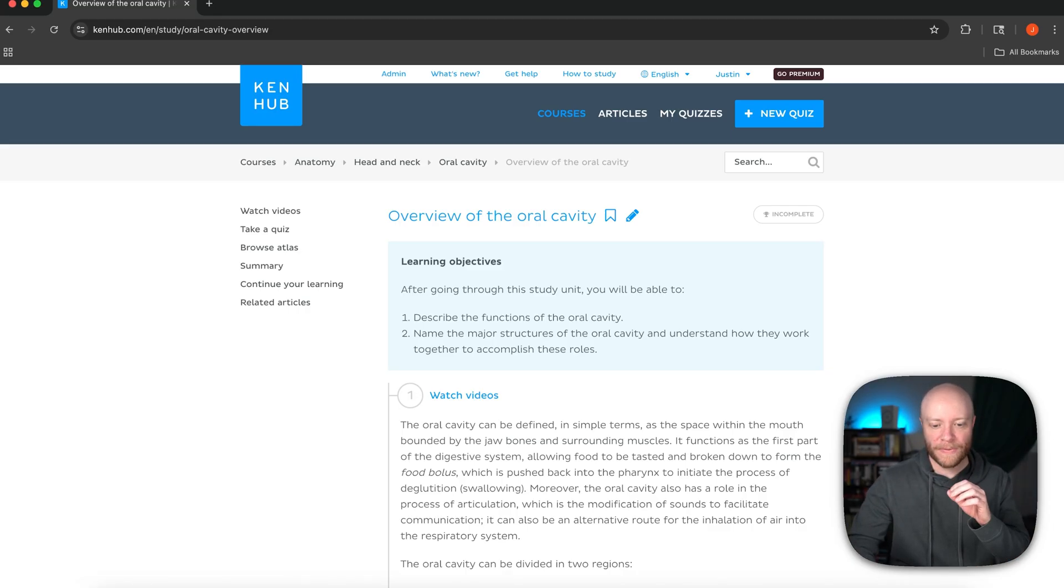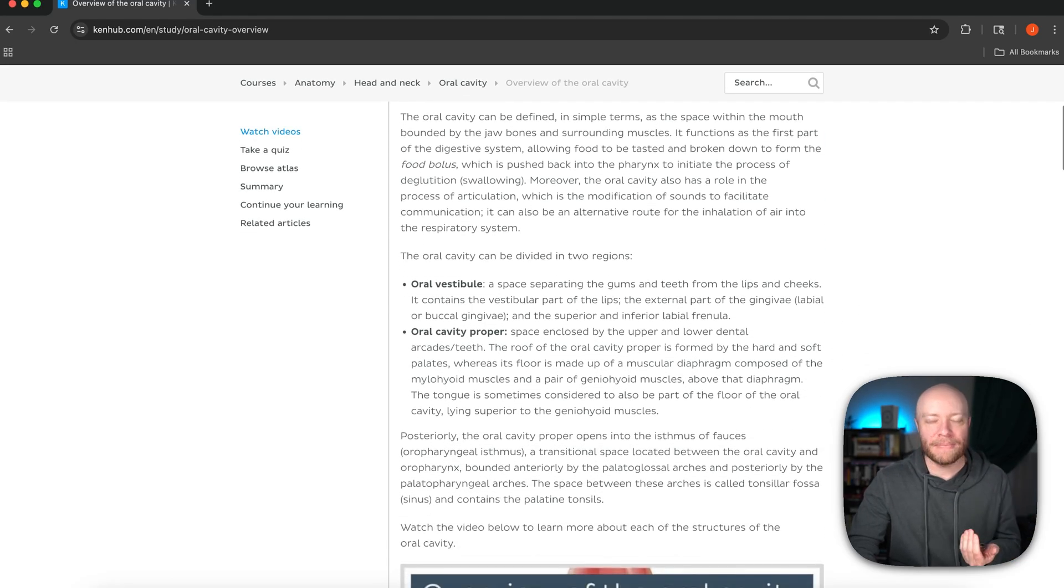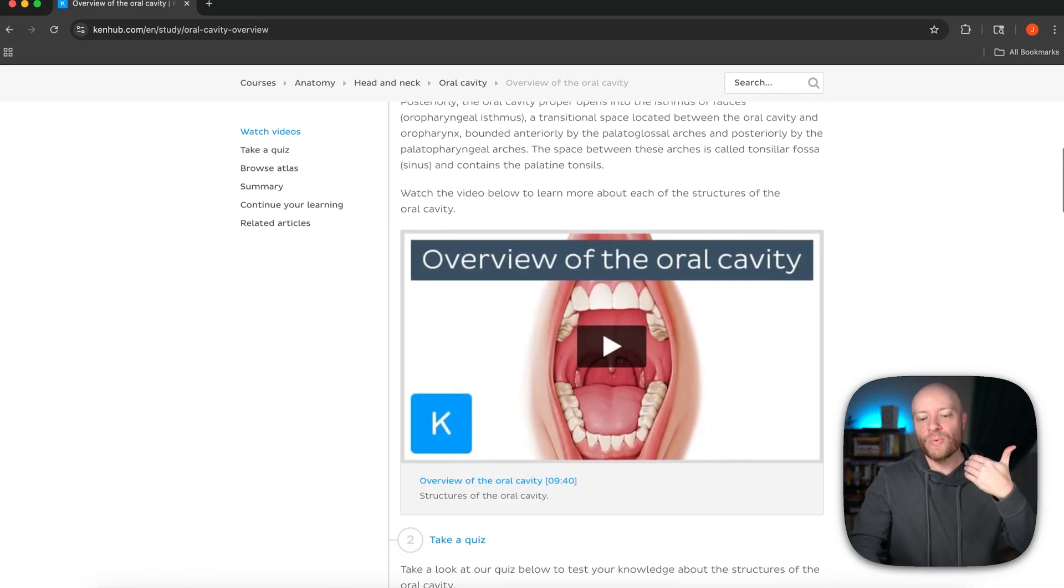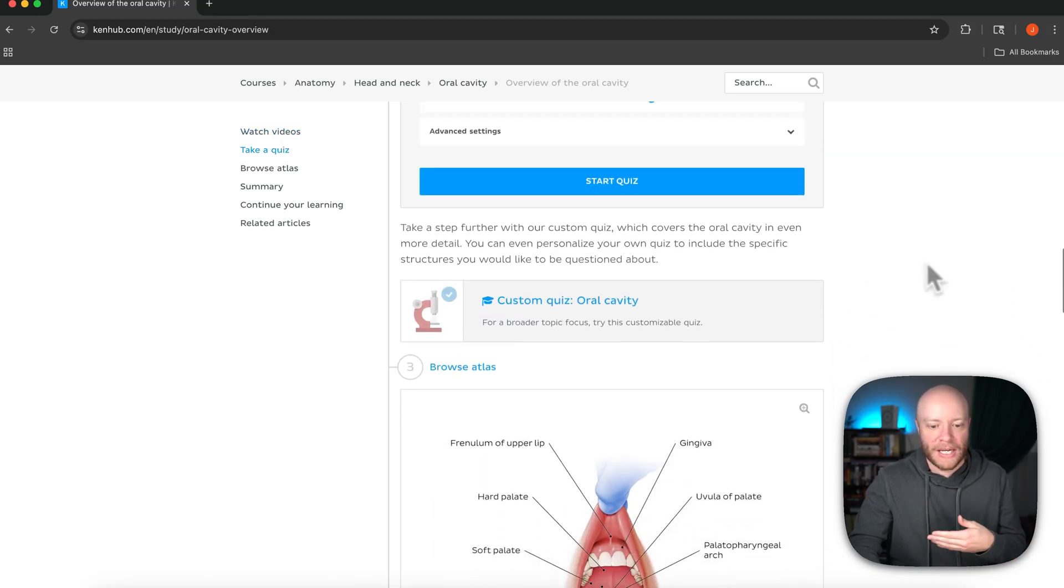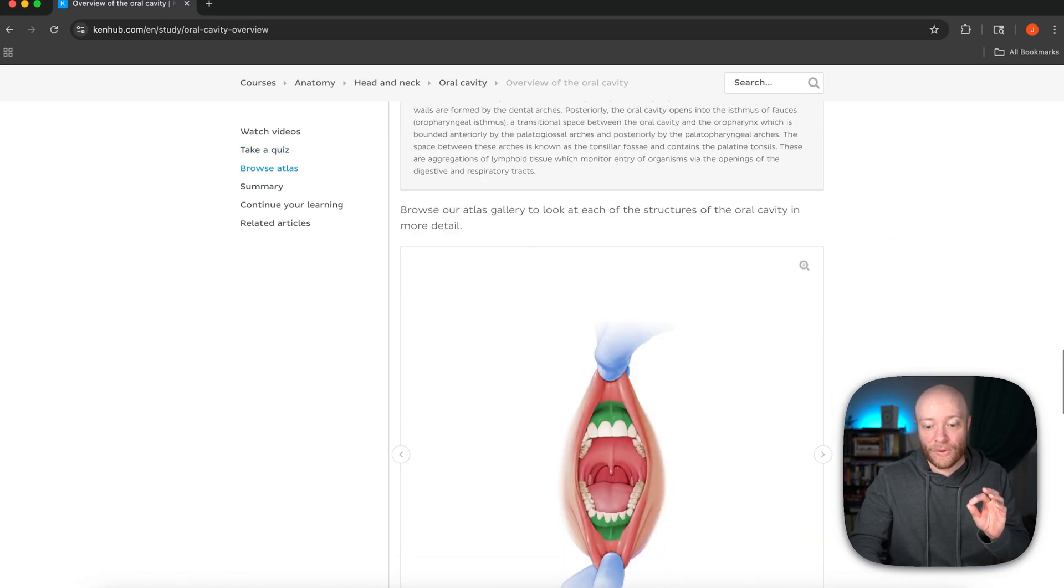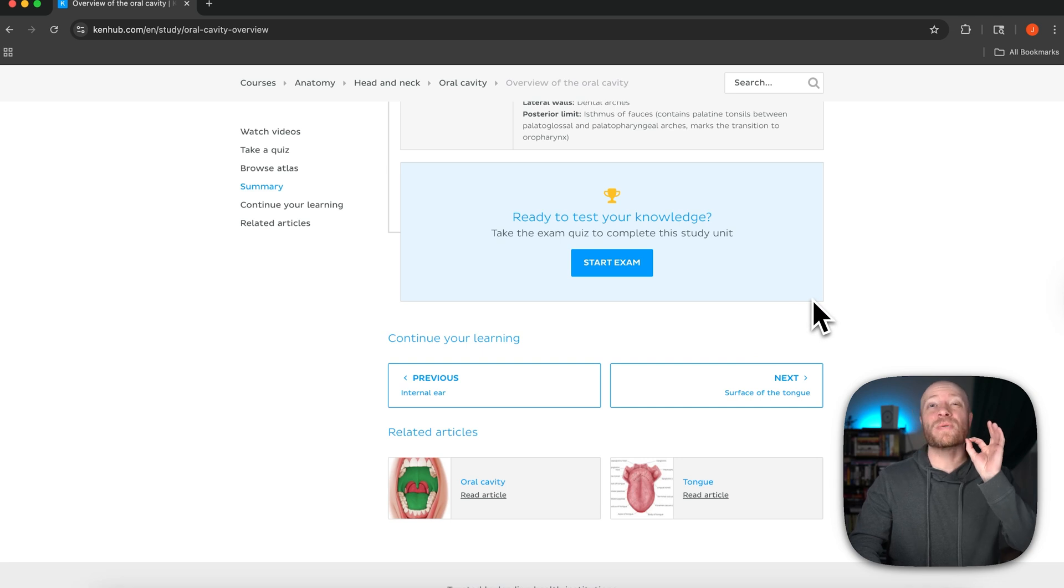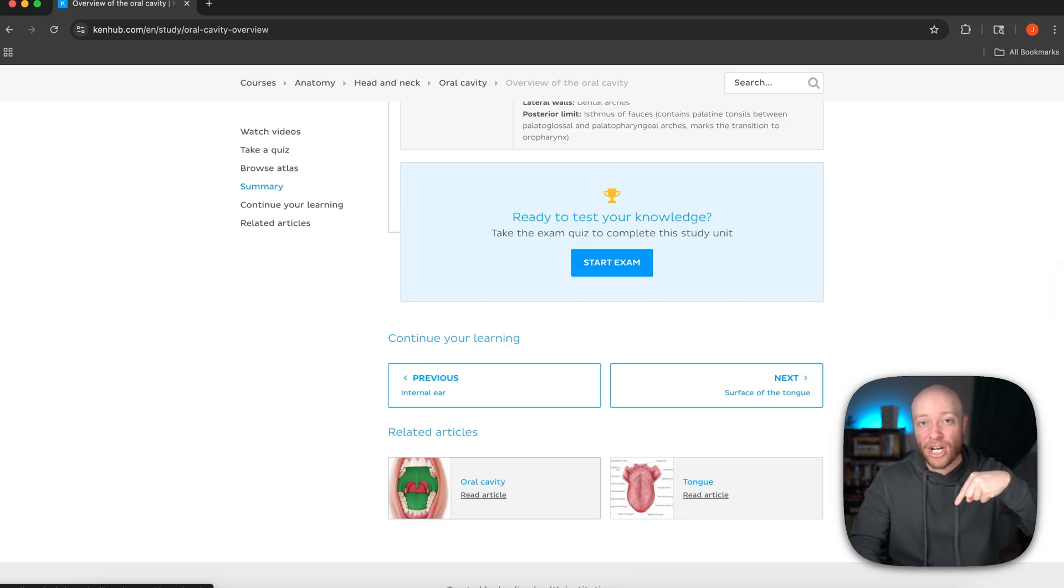If you've never seen our study units before, this is a one-stop shop where we put everything you could possibly need in order to understand something in one place. You will see videos, quizzes, atlas images, and as we scroll down, you can see summary tables and we can even have an exam to make sure you can test your knowledge. We also place articles and those, by the way, are 100% free. We will link the article to the oral cavity to this video so you can check that out in the description below.